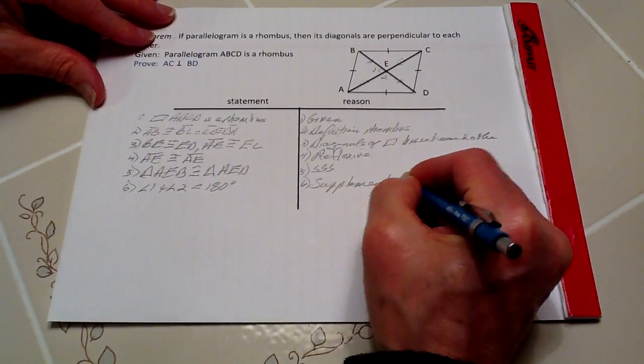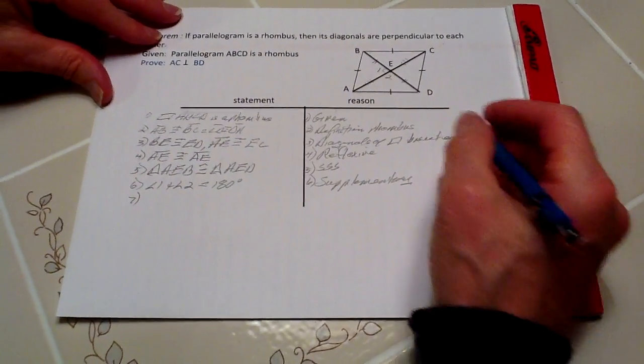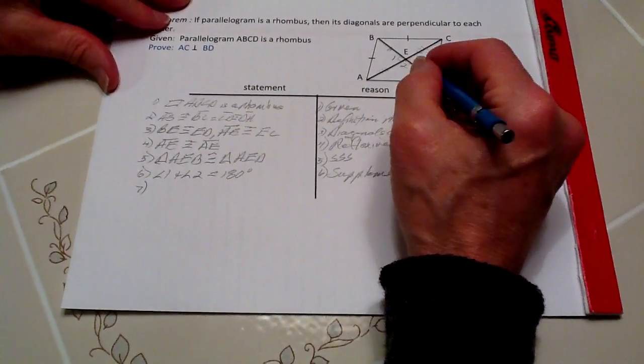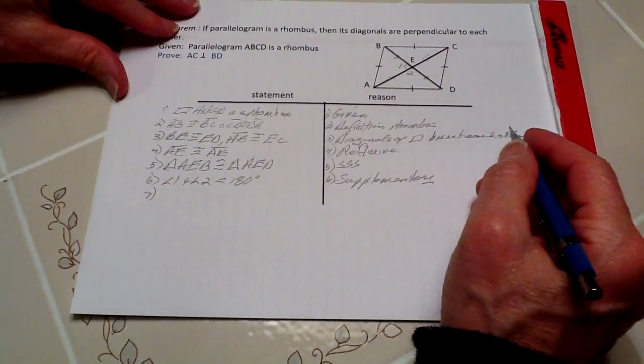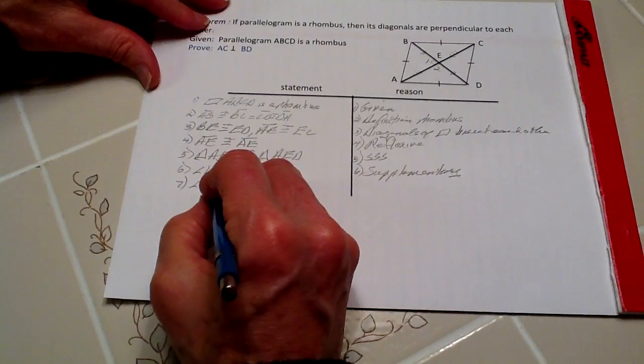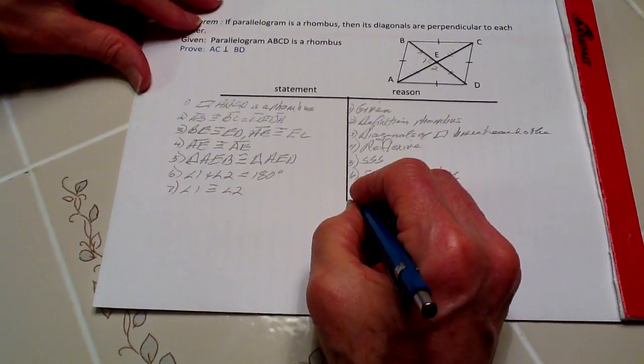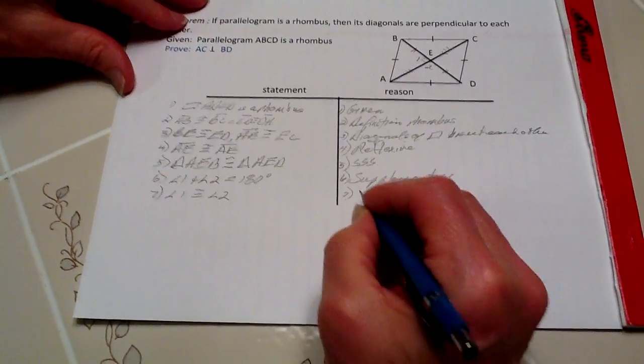From that, we also know, because of corresponding parts, that angle one and angle two are congruent. We've already proven that these triangles were congruent, so they are corresponding parts, CPCTC.